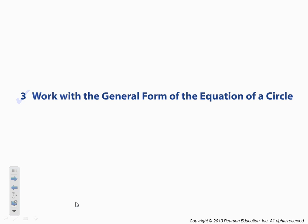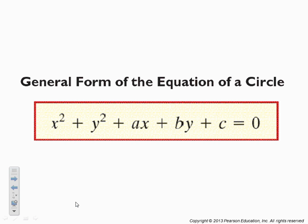Our third learning objective is to work with the general form of the equation of a circle. The general form is x squared plus y squared plus ax plus by plus c equals zero. It's what we get when we multiply out the (x minus h) squared and the (y minus k) squared terms and then move the radius back to the left-hand side.